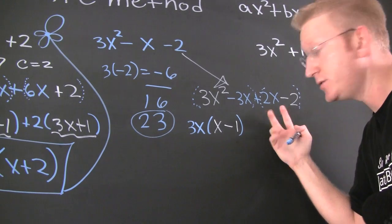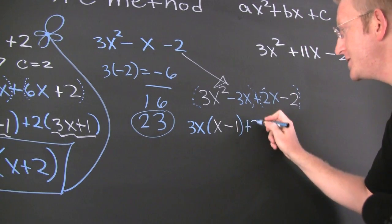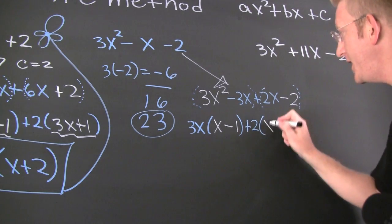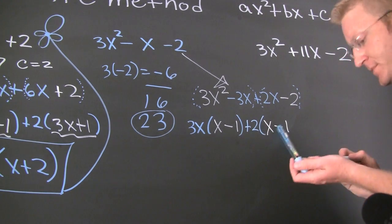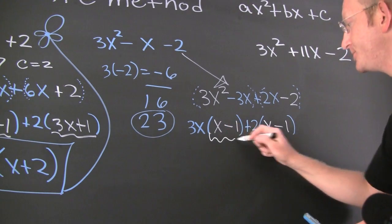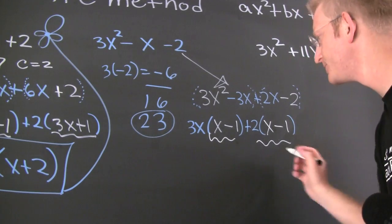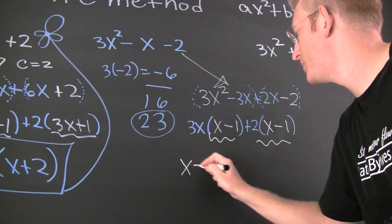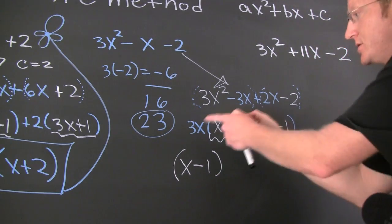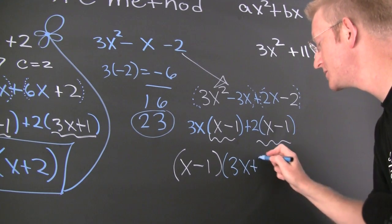I'm going to pull a positive 2 out of that second group, and I'm going to have an x minus 1. Do I have a common factor? Yes, I do — an x minus 1. So I can pull that out front: x minus 1 times the leftovers, 3x plus 2.